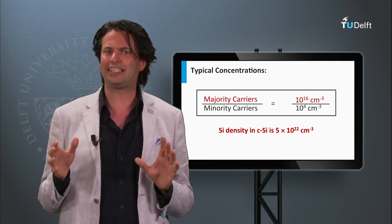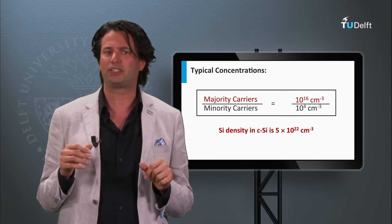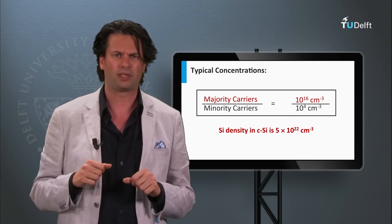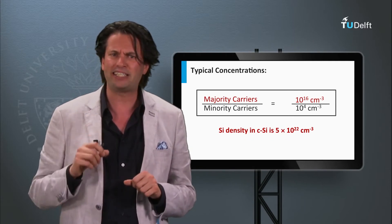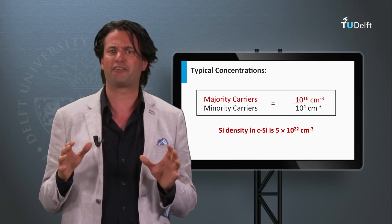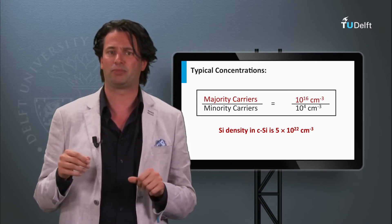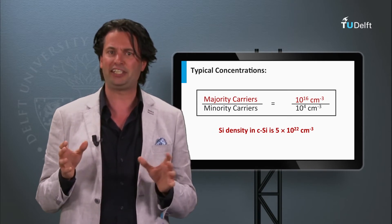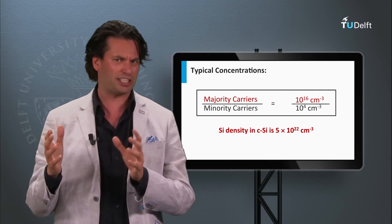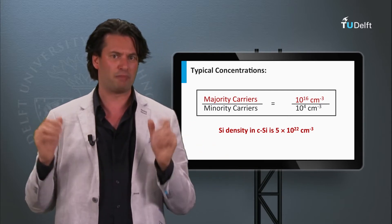Note that the silicon density in crystalline silicon is 5 times 10 to the 22nd per cubic centimeter. This means that the total number of charge carriers is much lower than the typical density of silicon atoms. The ratio of majority charge carriers to silicon atoms in this example is 1 to 5 million.